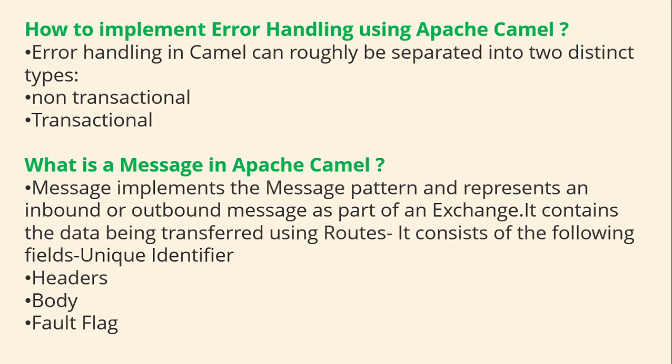How to implement error handling using Apache Camel? Error handling in Apache Camel can roughly be separated into two parts or types: non-transactional and transactional.